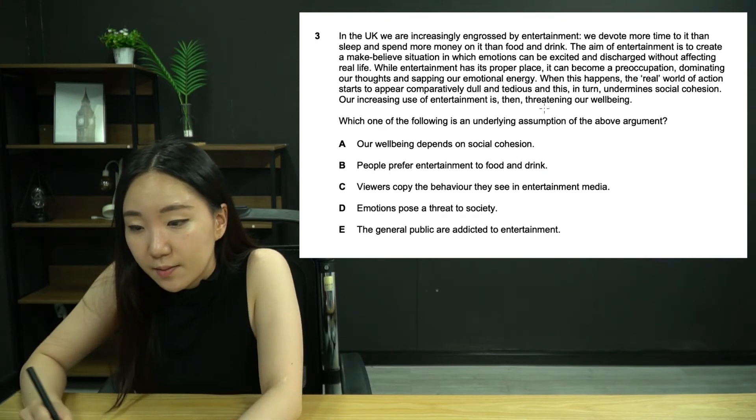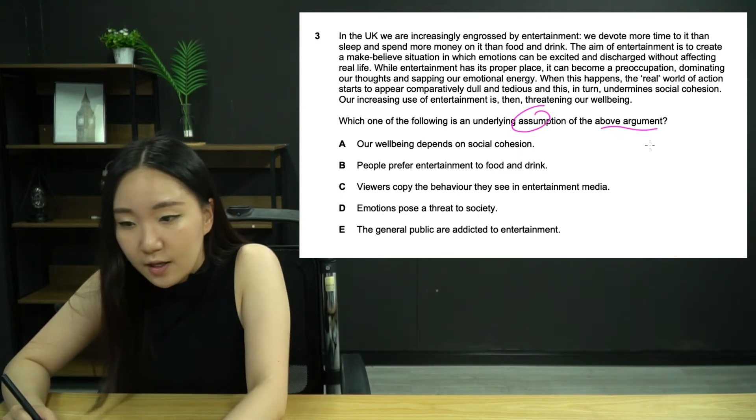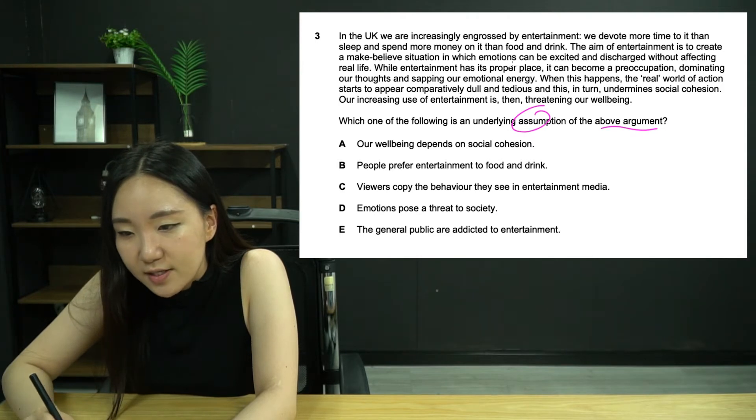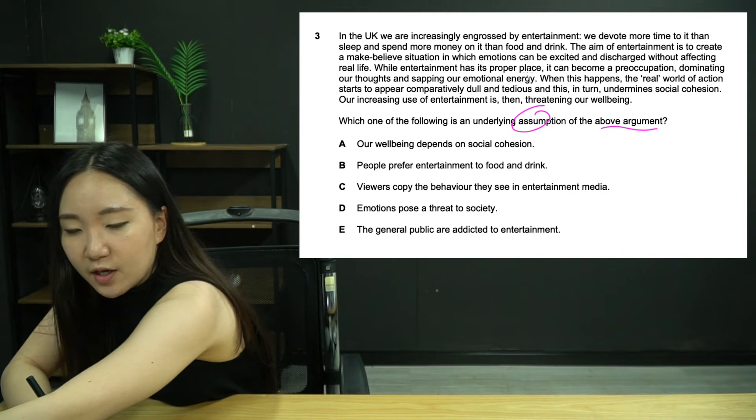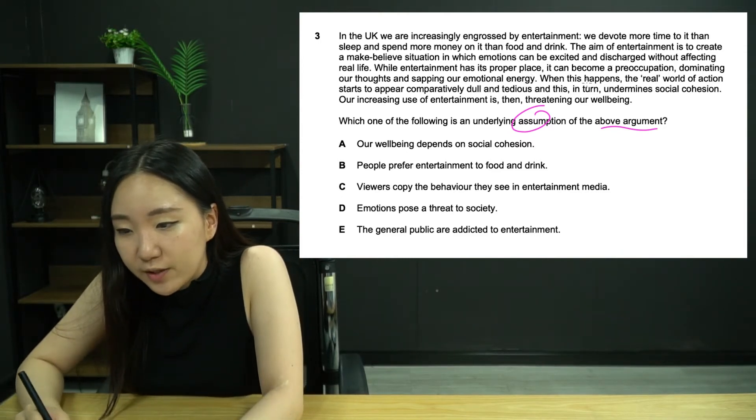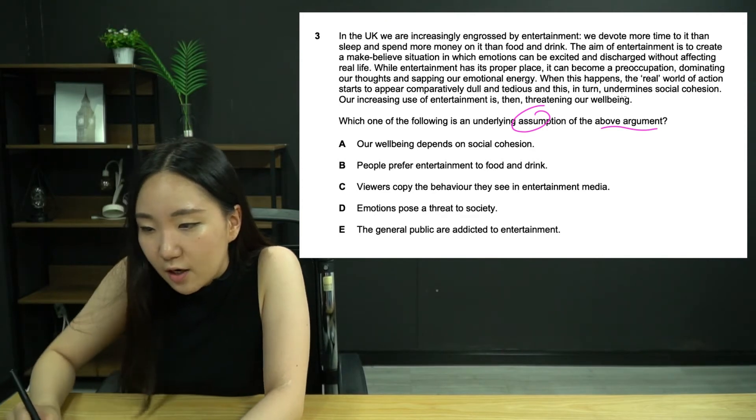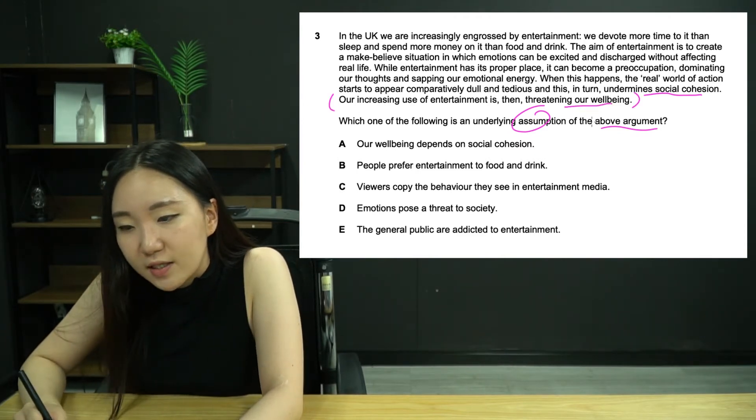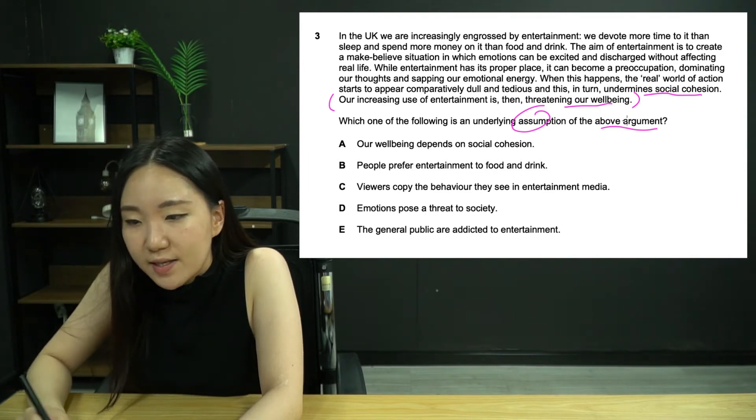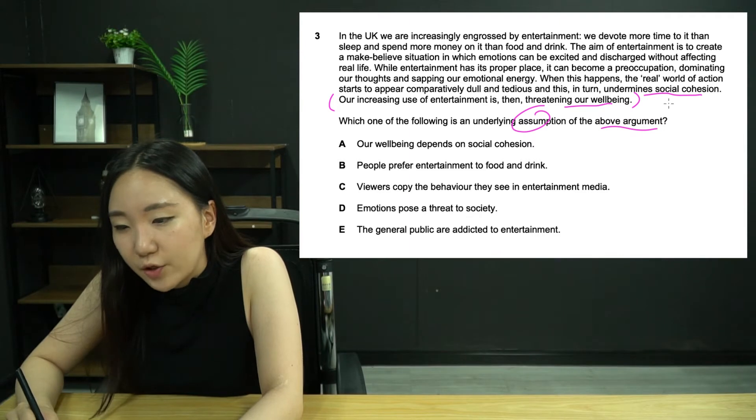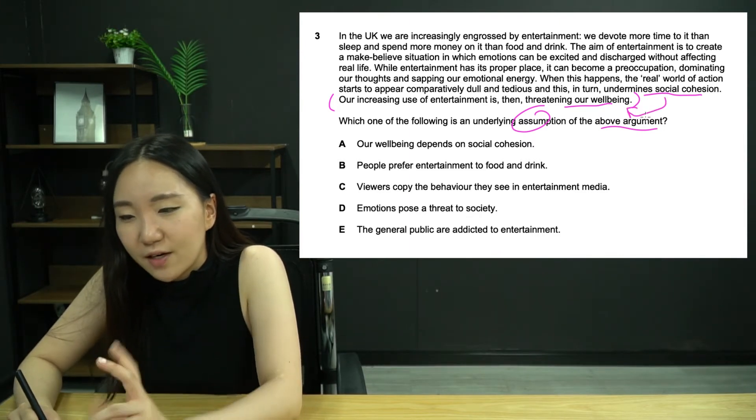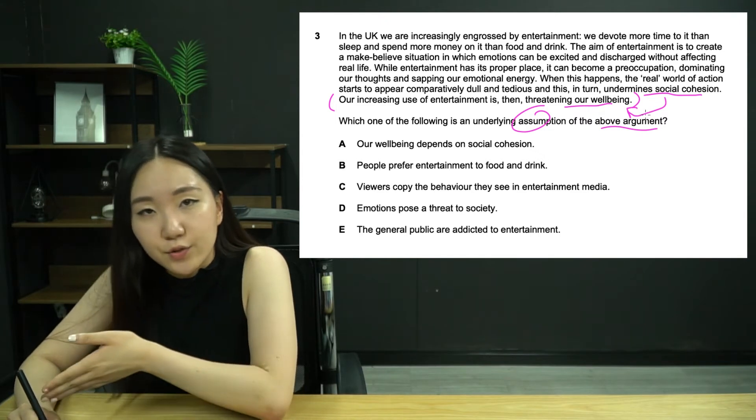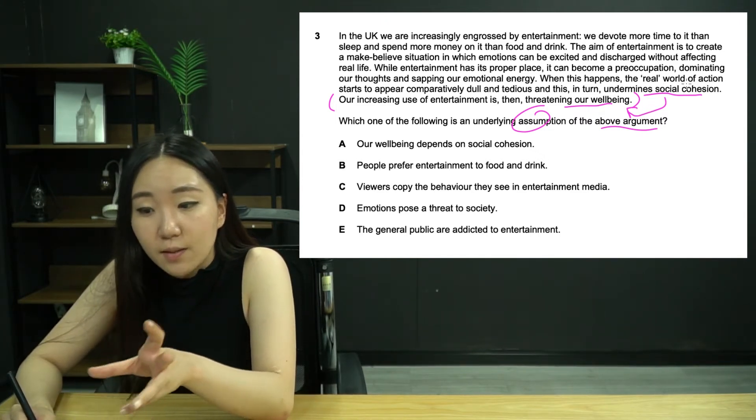Question three. An underlying assumption of the argument. Again, we're going to find the conclusion, then the argument, then the assumption. In the UK, we are engrossed by entertainment. The aim is to create a situation where emotions can be excited without affecting real life. When this happens, the real world seems boring and this can undermine social cohesion. Our increasing use of entertainment is then threatening our wellbeing. That's the conclusion.